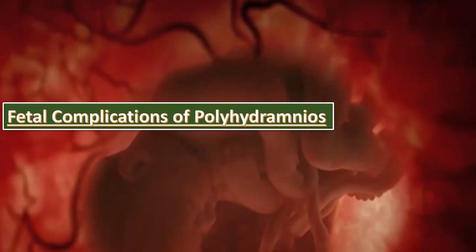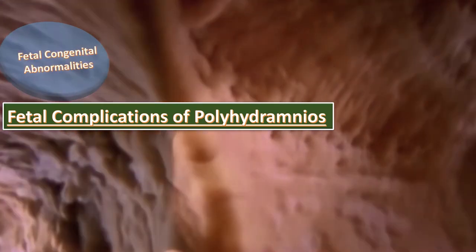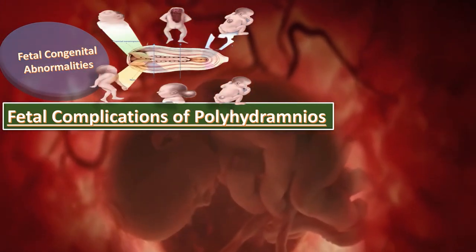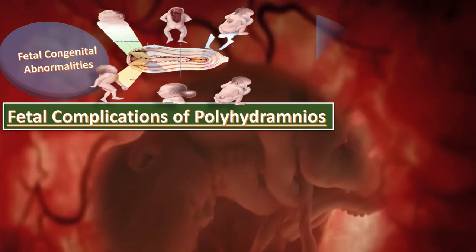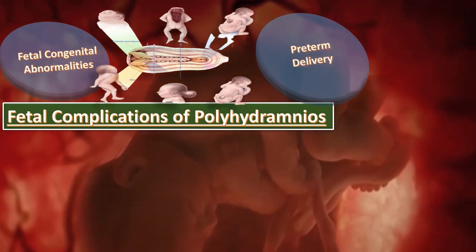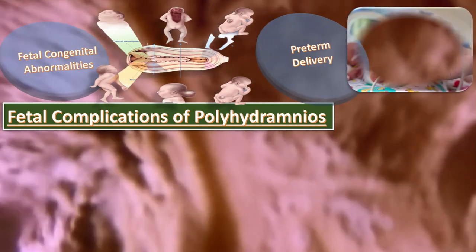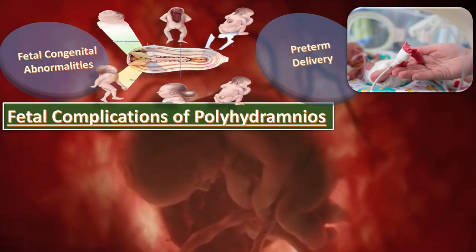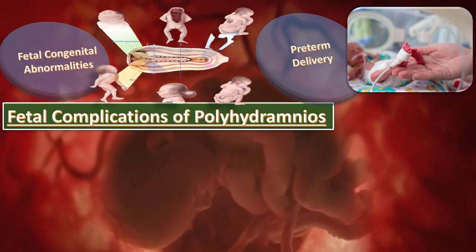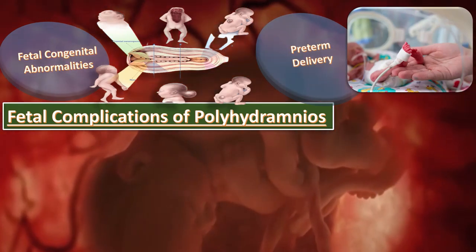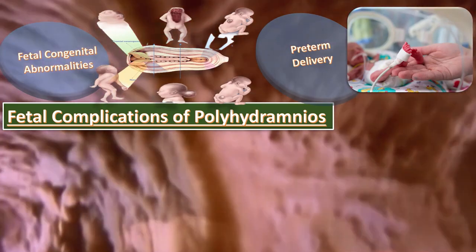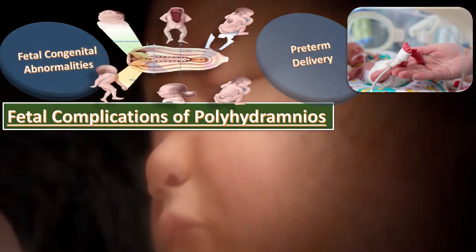What are the fetal complications of polyhydramnios? Those include, first of all, fetal congenital abnormalities. Massive hydramnios is associated with congenital abnormalities in about 30% of cases. Second is preterm delivery. An increased risk of preterm rupture of membranes and labor is observed in polyhydramnios due to mechanical pressure exerted by the amniotic fluid. Interestingly, the underlying cause as opposed to the severity of elevated amniotic fluid volume appears significant with regard to timing of preterm labor onset.